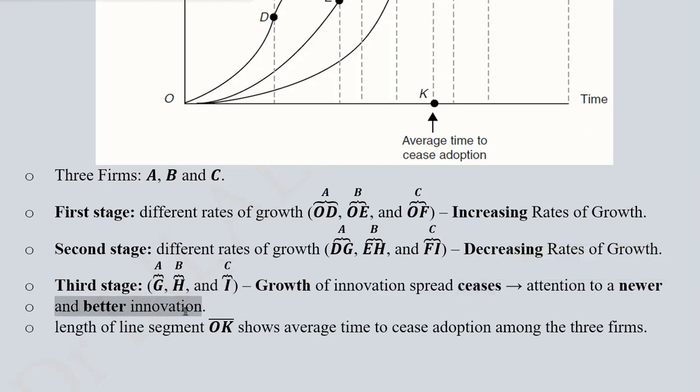And some new or better innovation was arising from A, B, and C. The points were G, H, and I, respectively. And the length of this segment, that is OK, shows us the average time to cease adoption. So you can pause the video and read these details.